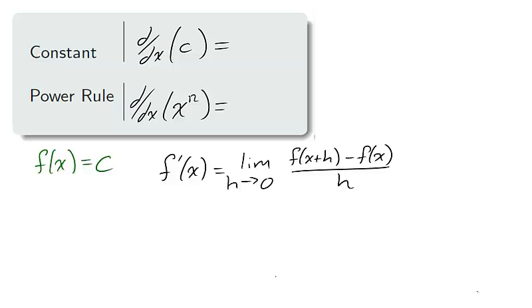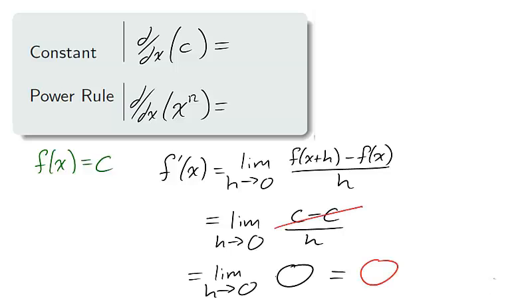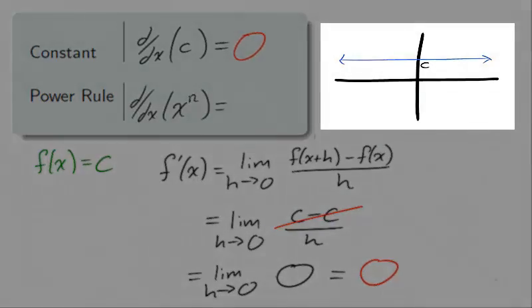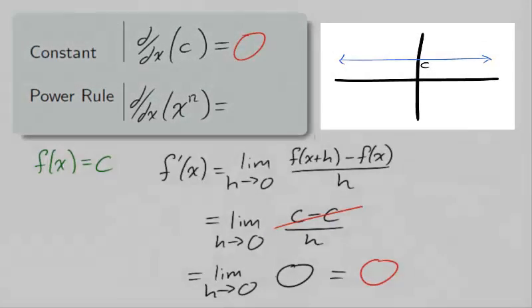We can use the limit definition to find the derivative of a constant function f, and no matter what the input, we replace f with c. In cancelling the numerator, we find that the derivative of a constant function is 0. It shouldn't be a surprise that we obtain 0, as a constant function has no change.